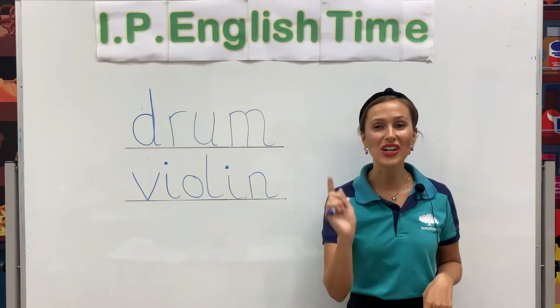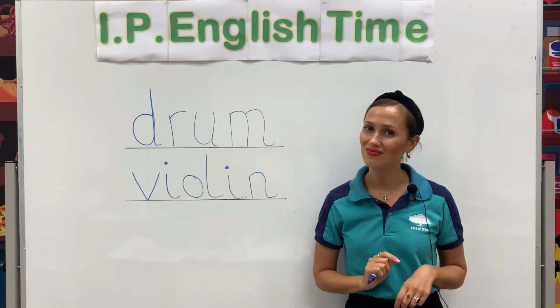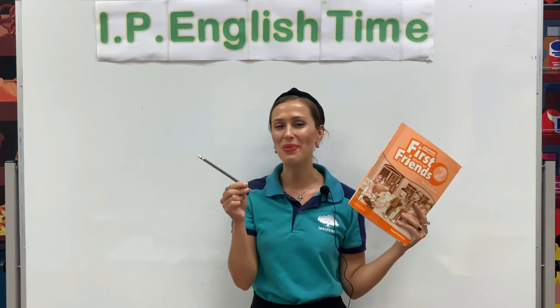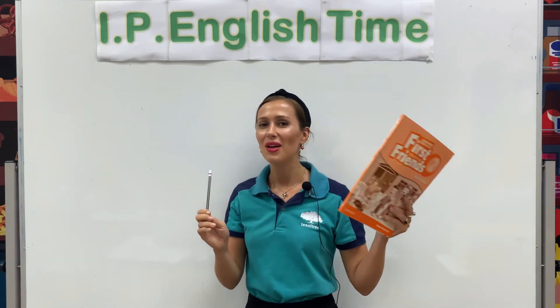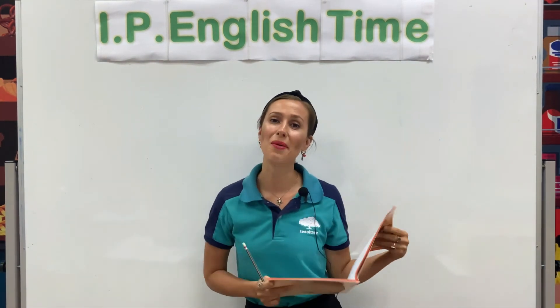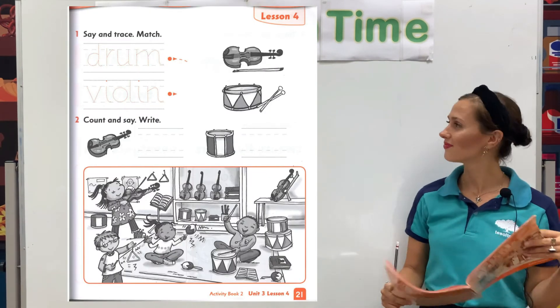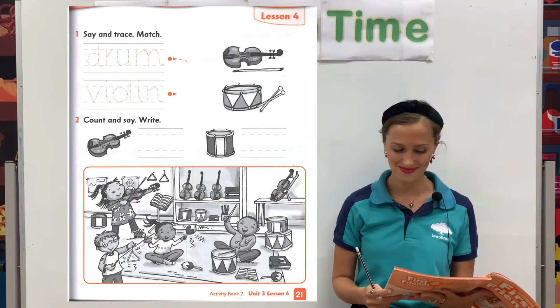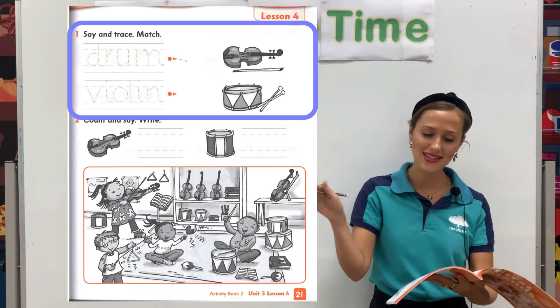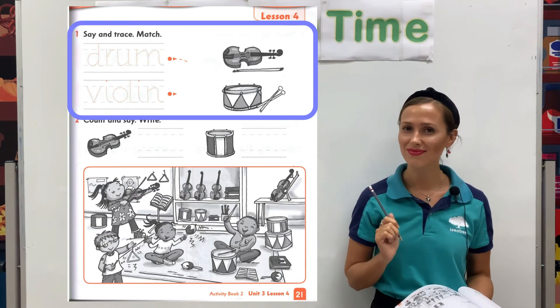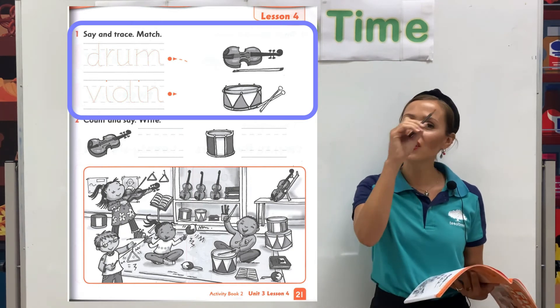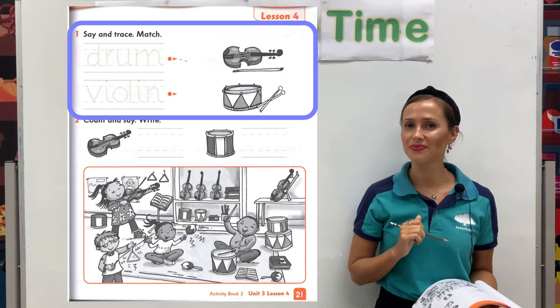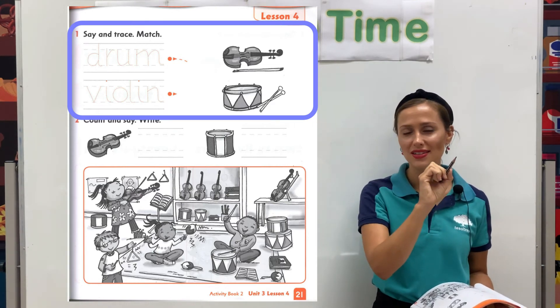You can write the words drum and violin. So now it is time to get your workbook ready. If you have your workbook ready, please open your book on page number 21. Page number 21. I want you to write drum and violin. If you are finished, you can trace the words with the pictures. Make a line from the word to the picture.